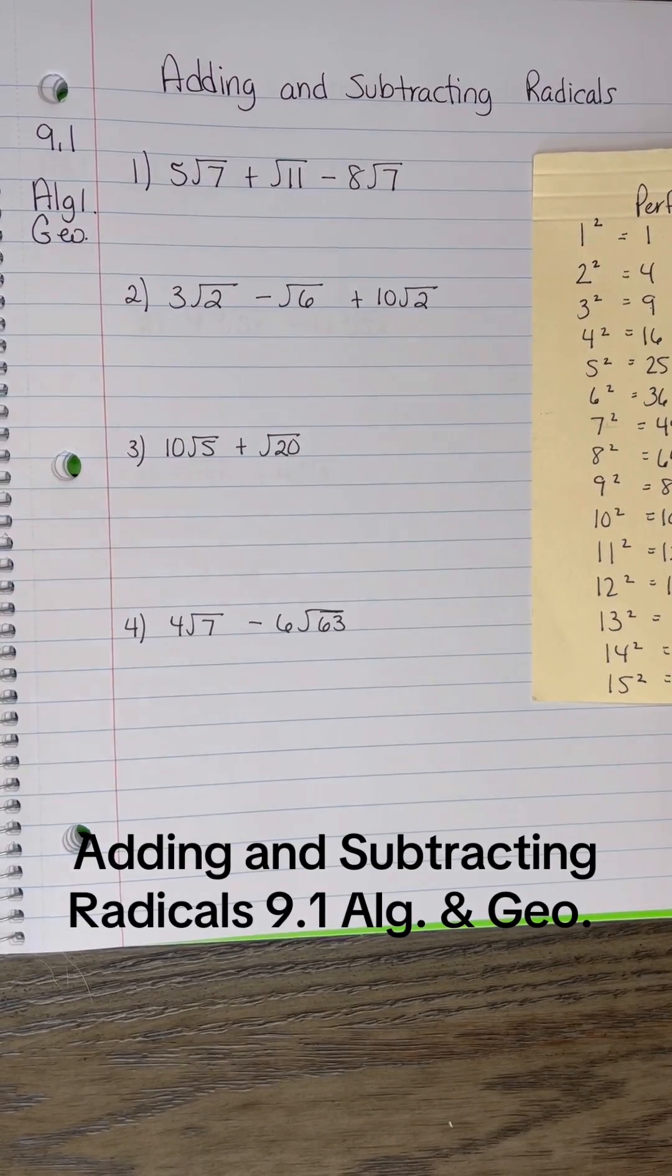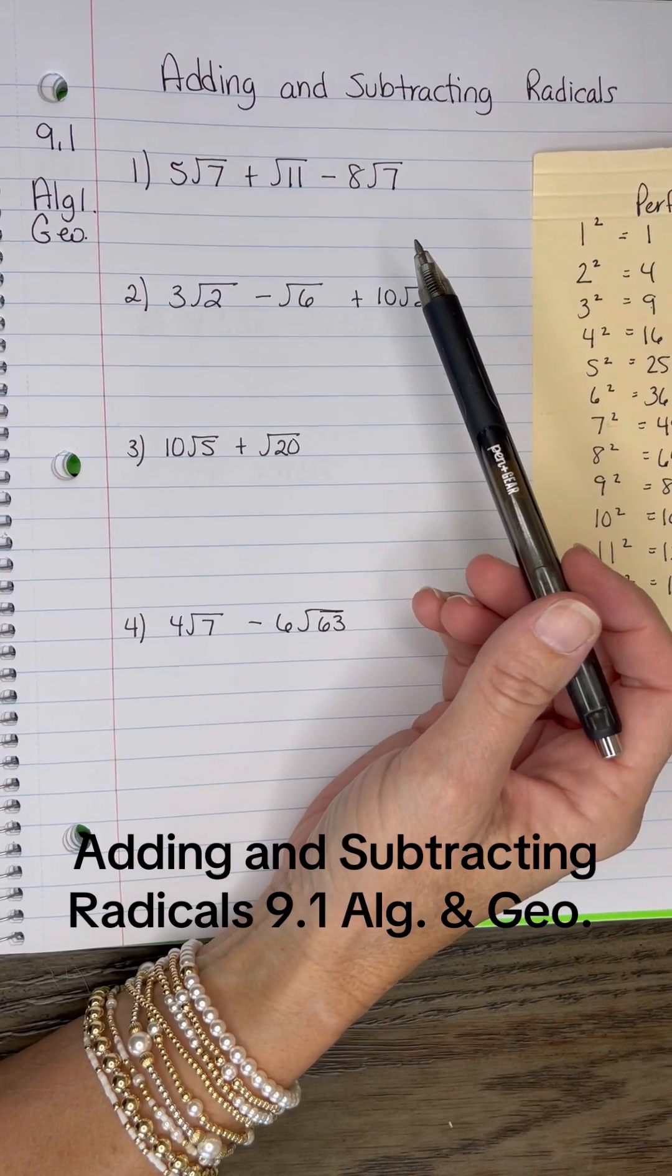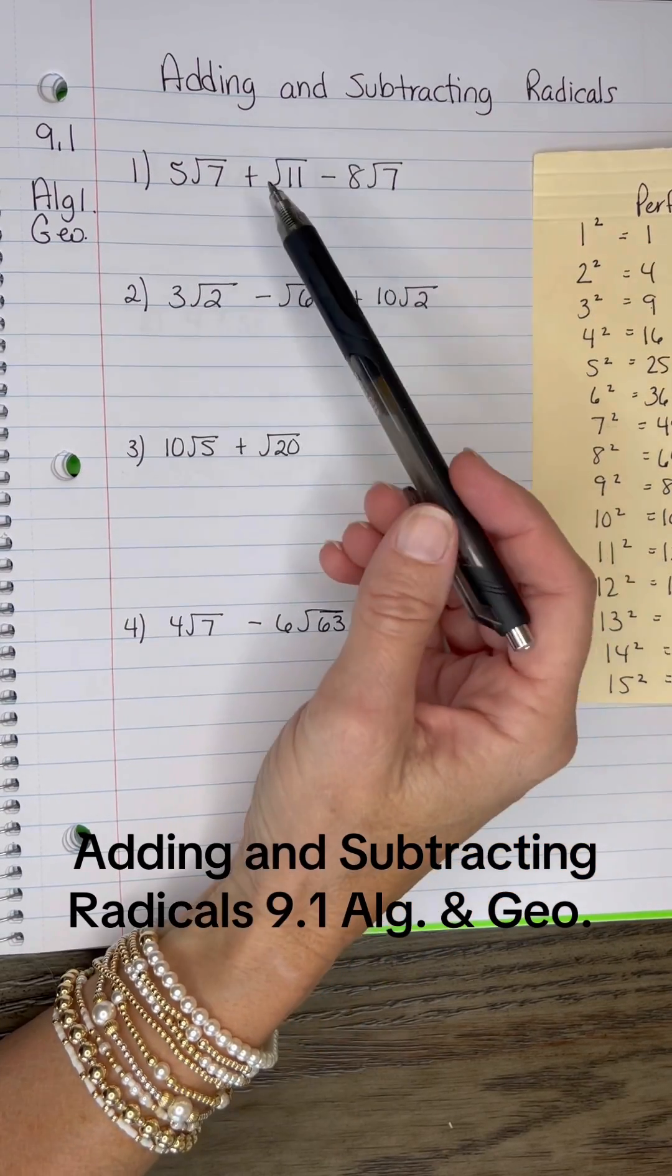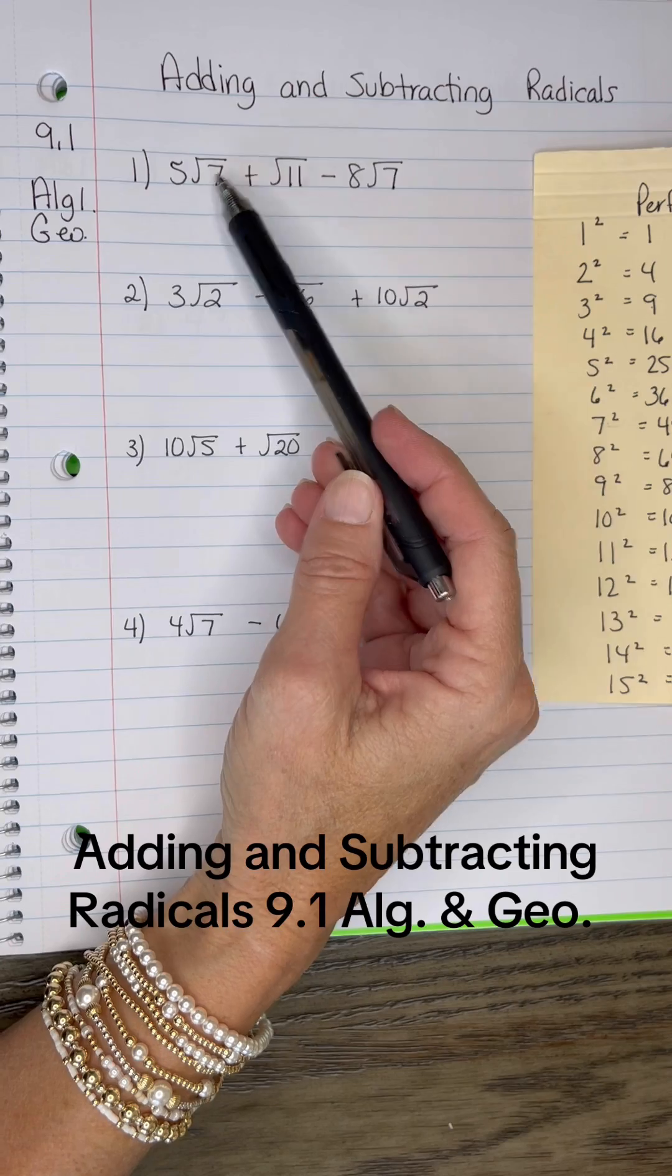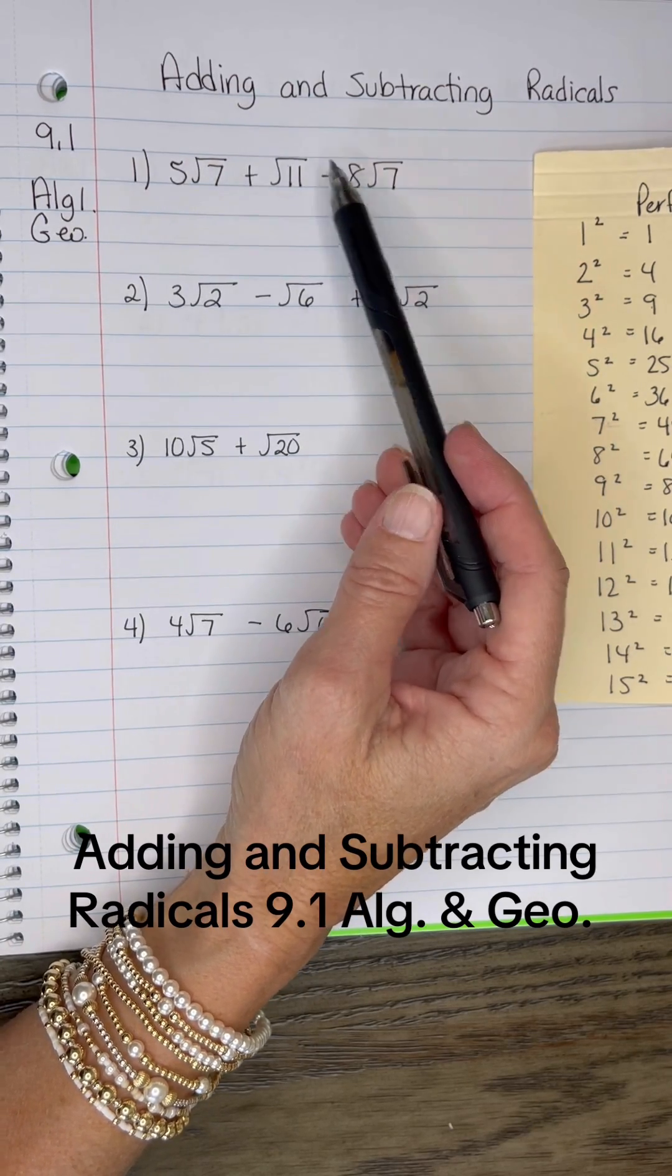We're going to add and subtract radicals. In this problem, what we're looking for is the same index and the same radicand. So √7 and √7 right here, the 5 and the negative 8 can be combined.